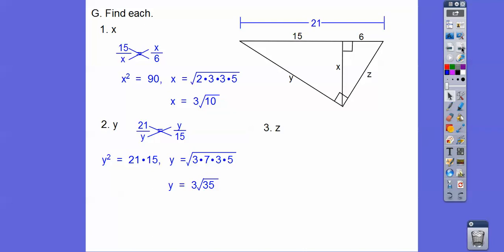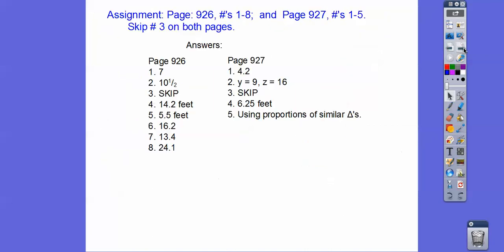Last one. Z is the geometric mean between the whole hypotenuse and the piece it touches here, which is 6. So that's what goes there. 21 is 3 times 7. 6 is 2 times 3. So a pair of 3's come out. We get 3 root 14. All right, again, I so apologize. But if you're in my class, that would be your assignment. I got kiddos coming in, so that's why I'm in a rush. Sorry.